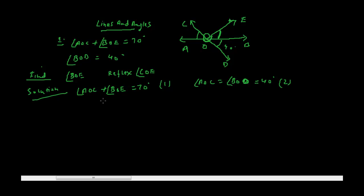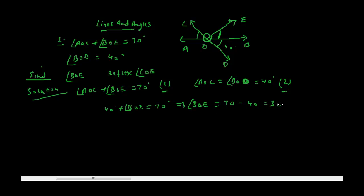From equations 1 and 2, AOC can be replaced by 40 degrees. So 40 plus angle BOE equals 70 degrees. This implies angle BOE equals 70 minus 40, which is 30 degrees. So angle BOE equals 30 degrees.